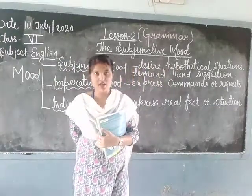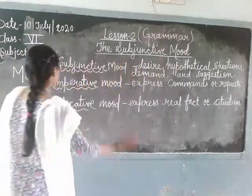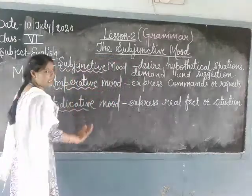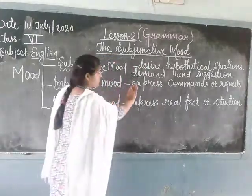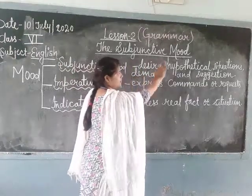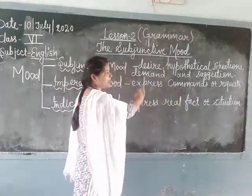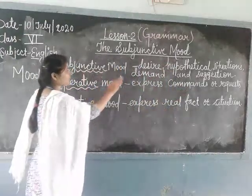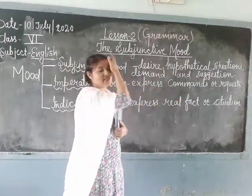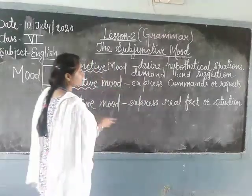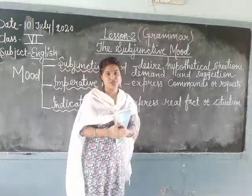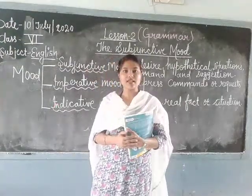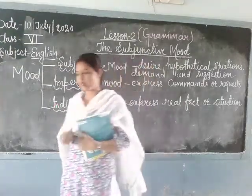I hope this topic is clear. Let me remind you — there are three types of moods: subjunctive mood, imperative mood, indicative mood. Subjunctive mood expresses desire, hypothetical situation, demand, and suggestion. Imperative mood expresses command or request. Indicative mood expresses real facts or situations. Now let's see examples related to the three moods.